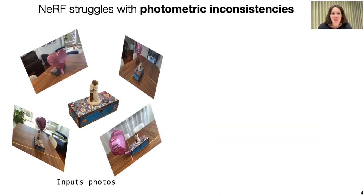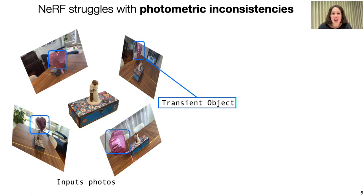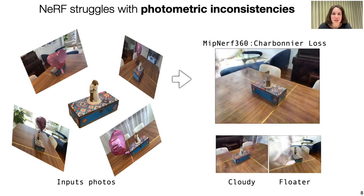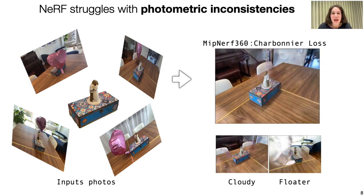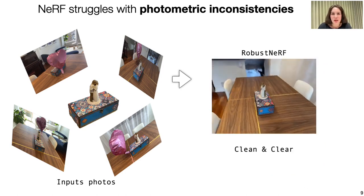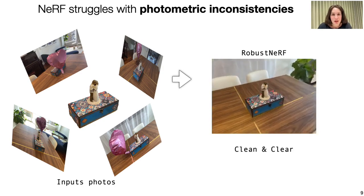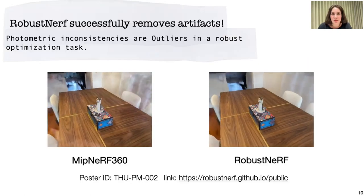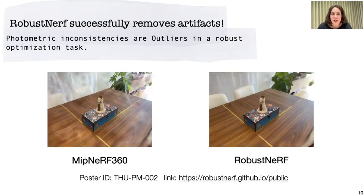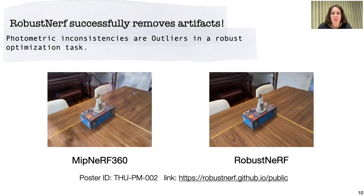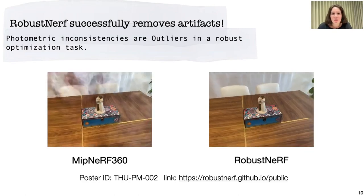Right now, if you have transient objects such as this randomly placed pink balloon, the rendering will be crowded with shadowy clouds and floater artifacts. As a solution to clean up the rendering and ignore the transient objects and distractors, we propose Robust NeRF. We approach this problem via the lens of robust optimization. Robust NeRF optimizes the NeRF model under spatially curated robust loss. Our poster is on Thursday and we look forward to talking to you.